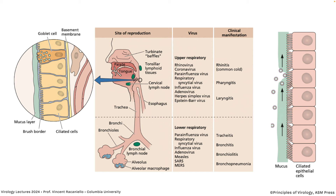Early in the pandemic, people were doing PCR and finding SARS-CoV-2 RNA in feces and saying it was an intestinal virus — but no, it was just passing through. The respiratory tract has upper and lower sections. Many viruses infect the upper tract causing rhinitis, pharyngitis, or laryngitis. Some viruses can move to the lower tract involving the trachea, bronchi, bronchioles, and even the alveoli. When viruses damage alveoli, we call that bronchopneumonia or pneumonia.